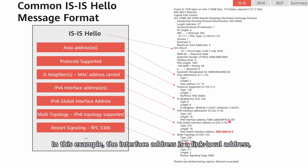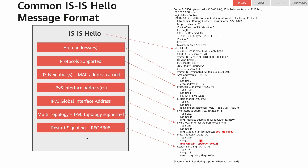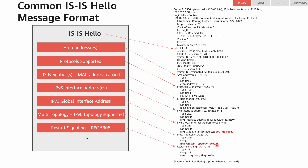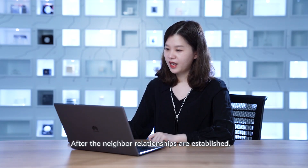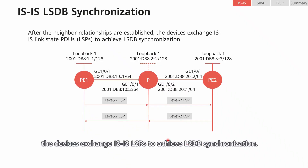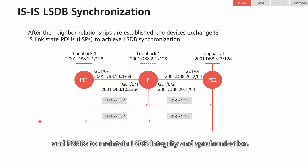In this example, the interface address is a link-local address, which IS-IS can use to establish a neighbor relationship. Below the user-configured global unicast address, we can see topology information, which indicates the IPv6 independent topology that was previously enabled. The ID of an IPv6 topology is 2, while that of an IPv4 topology is 0. After the neighbor relationships are established, the devices exchange IS-IS LSPs to achieve LSDB synchronization. In LSDB maintenance, IS-IS may also use CSNPs and PSNPs to maintain LSDB integrity and synchronization.